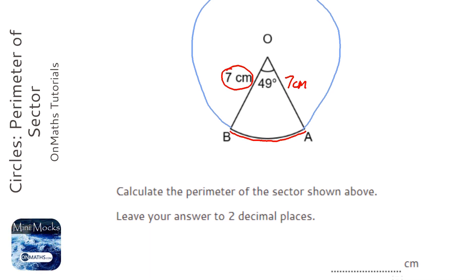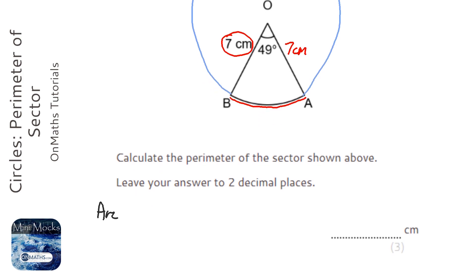So we need to work out the arc first. To work out the length of the arc, we're going to do the full circumference of the circle, which is pi times the diameter. Now the diameter here is going to be 14 because the radius, the distance between the outside of the circle and the center of the circle is 7, and the diameter is twice the radius, so that's going to be 14.